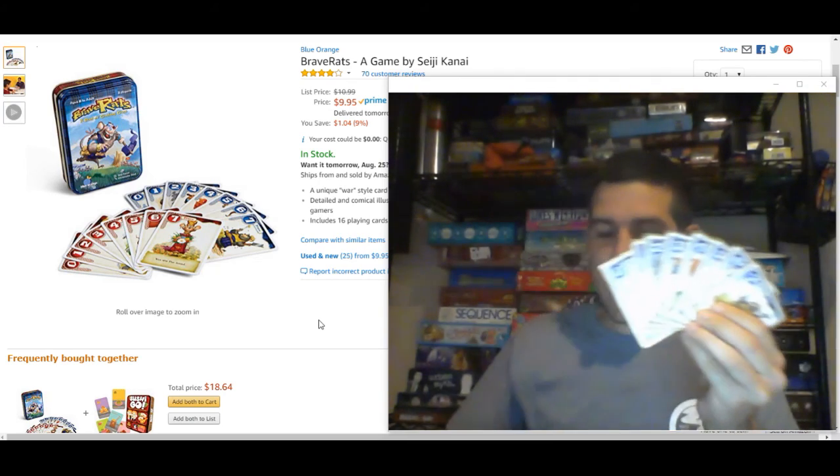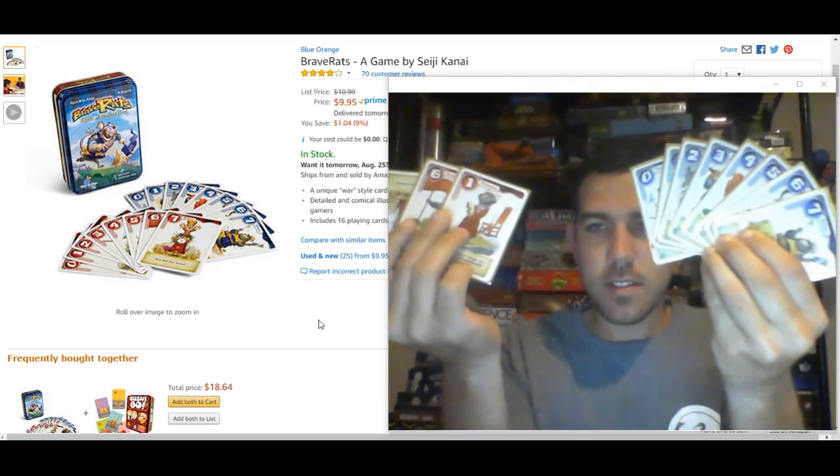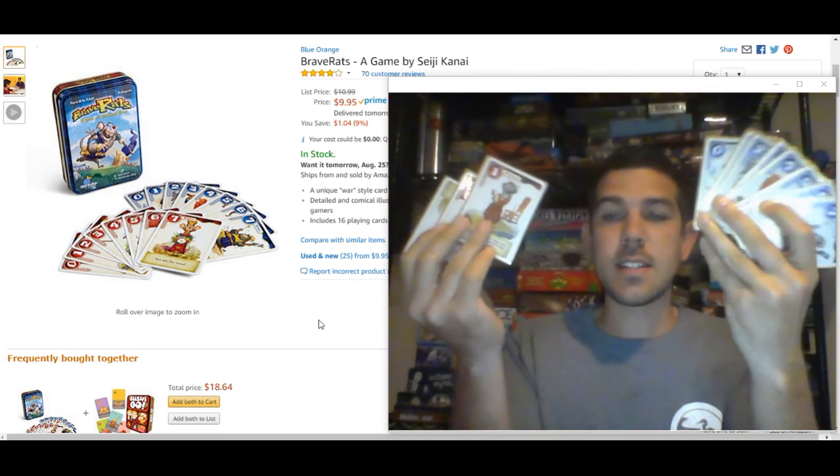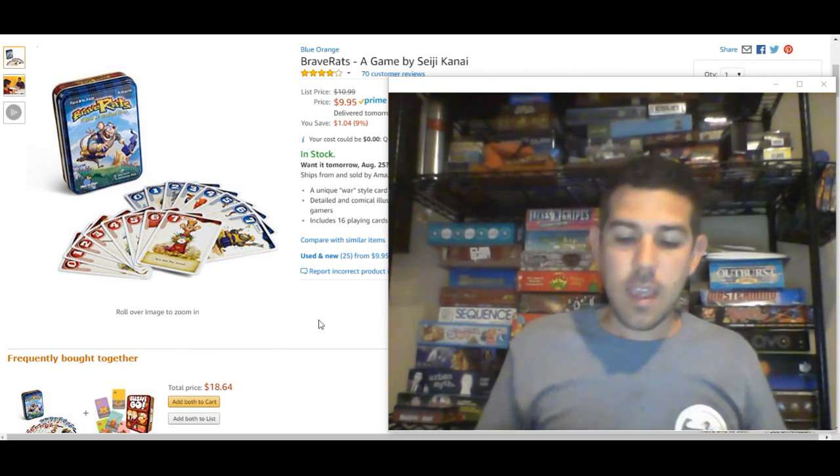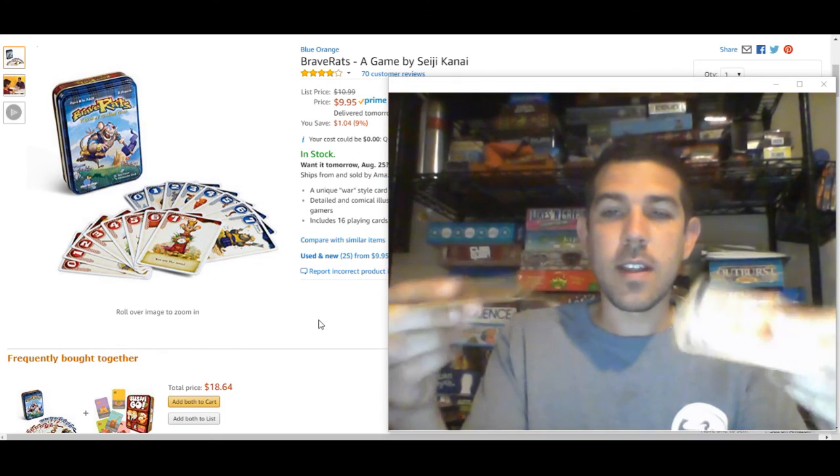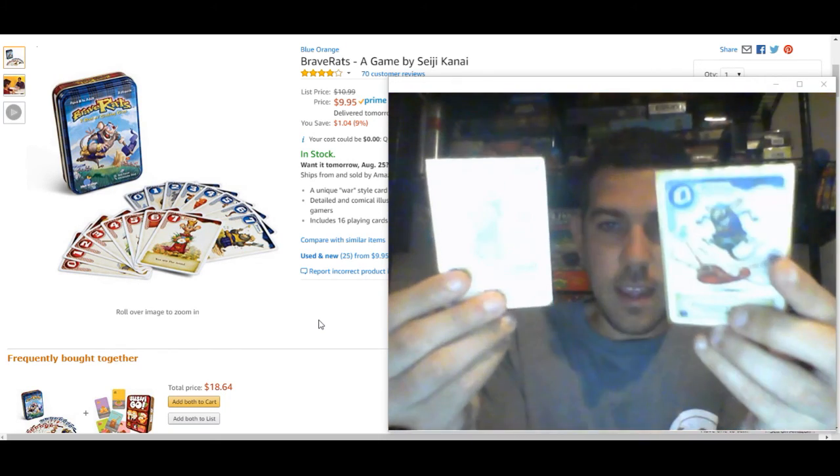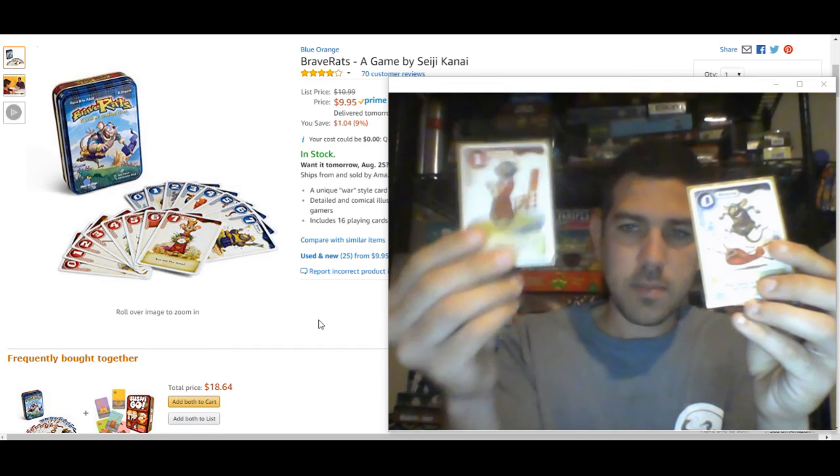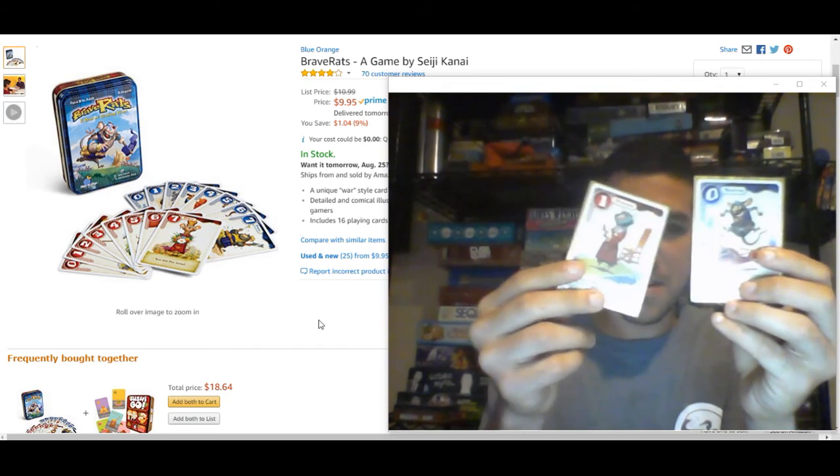And now the goal of the game is each person is going to secretly choose one of their rats to play down. And then once they're both face down, you flip them over and see who wins. And in most cases, the higher number will beat the lower number.